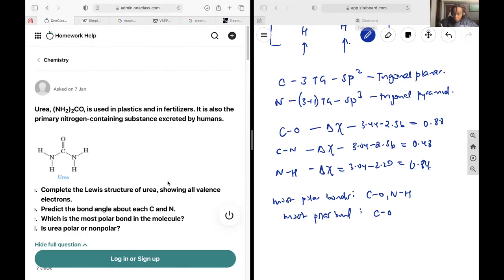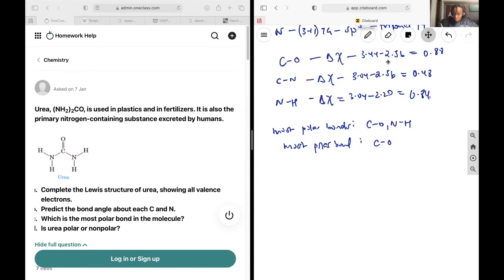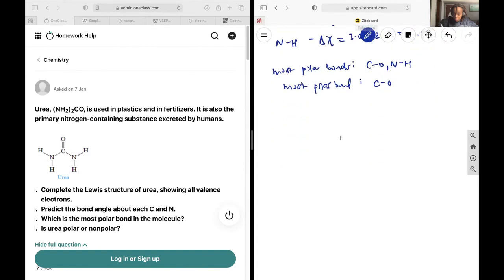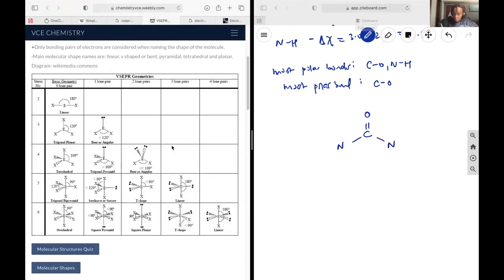And then lastly, we want to determine whether urea is polar or nonpolar. So let's go about drawing what its structure should look like when you know the VSEPR theory around the central atoms. And so start with the trigonal planar nature of the CO to CN bonds. And then you have to factor in the trigonal pyramid nature of the N to H bonds. And so you're going to have the lone pair above it. You have the C group. And you'll have one H coming out and one H going to the back. The same thing here.